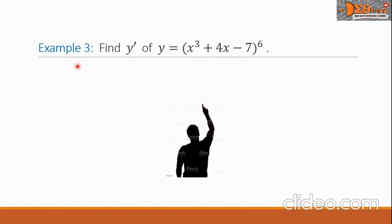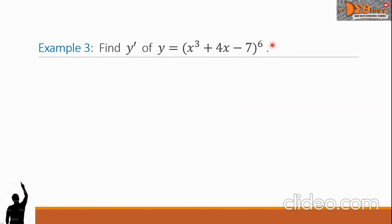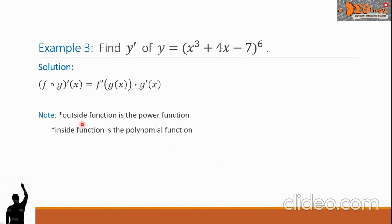Example 3: Find y prime where y equals the quantity x cubed plus 4x minus 7, all raised to power 6. Let us write the formula for the chain rule. The outside function is the power function, dot power 6, and the inside function is the polynomial trinomial.